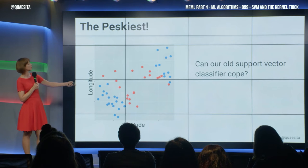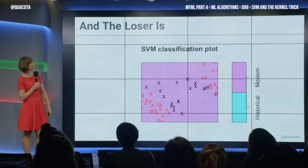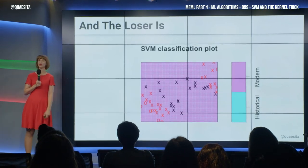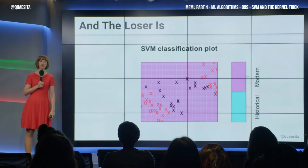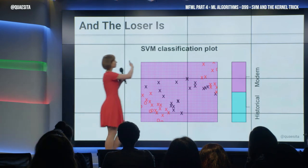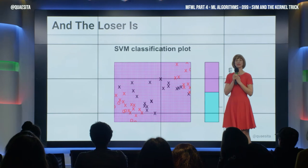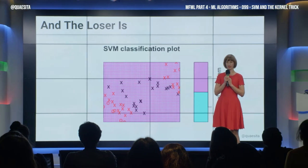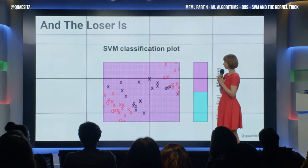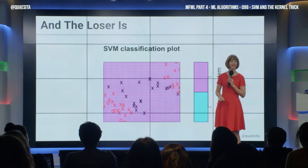Okay, let's try out our previous support vector classifier. And it suggests, because we have more modern buildings than historical buildings, why don't we put the line up there in the top right hand corner at plus infinity, plus infinity. Call everything modern and be done with it.